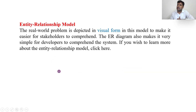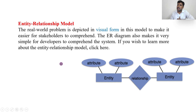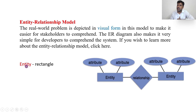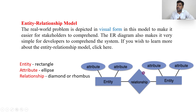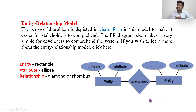Next is the Entity-Relational model, or ER model. The ER model contains three things: Entity, which is represented in the form of a rectangle; Attributes, which are represented in the form of an ellipse; and Relationship, which is represented in the form of a diamond, also called a rhombus. This model visualizes how data is represented and how entities are connected to each other.